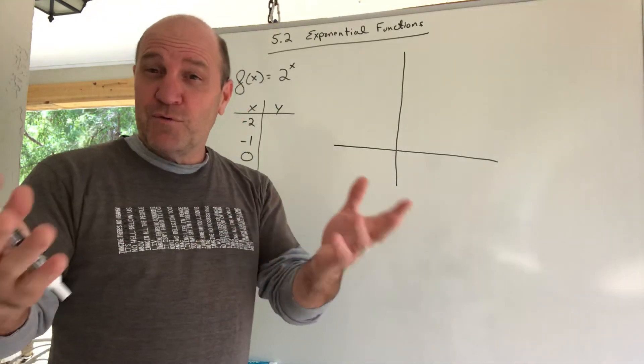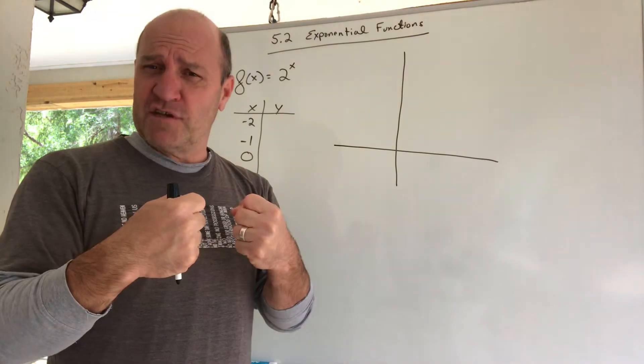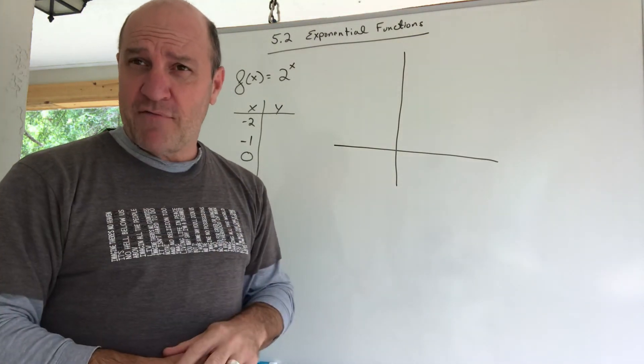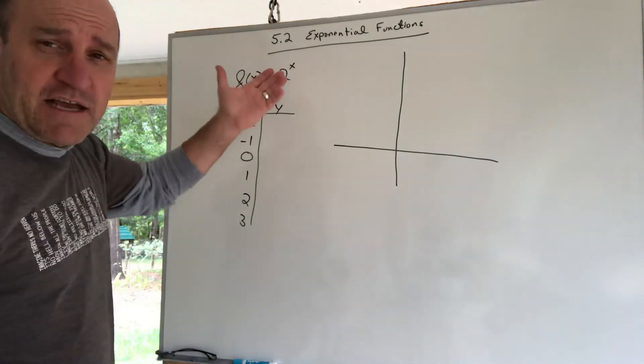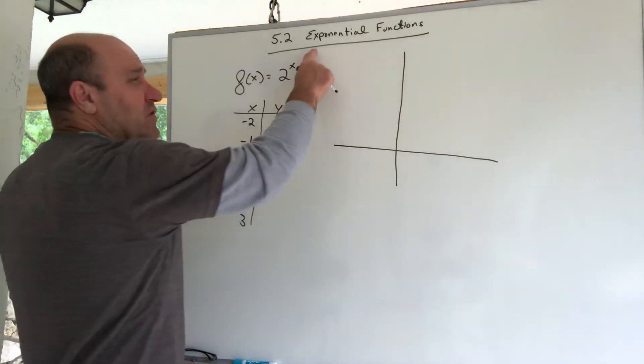Two functions that are related, they're cousins, they're inverse functions of each other. Two different functions are studied here in chapter 5. So let's start with the exponential functions. Technically this is section 5.2.